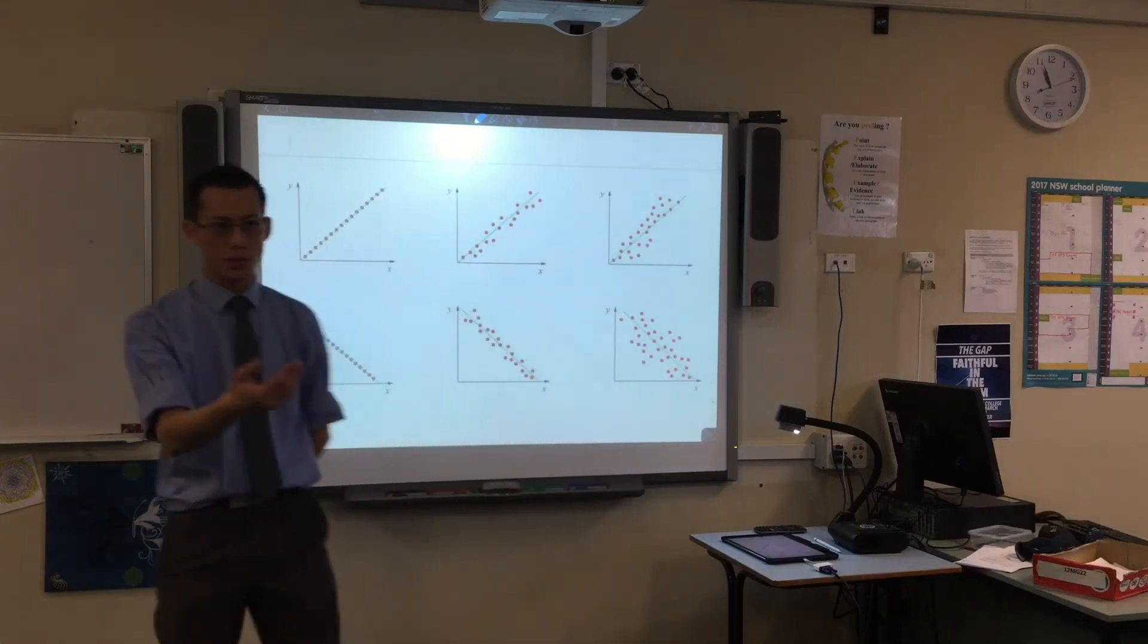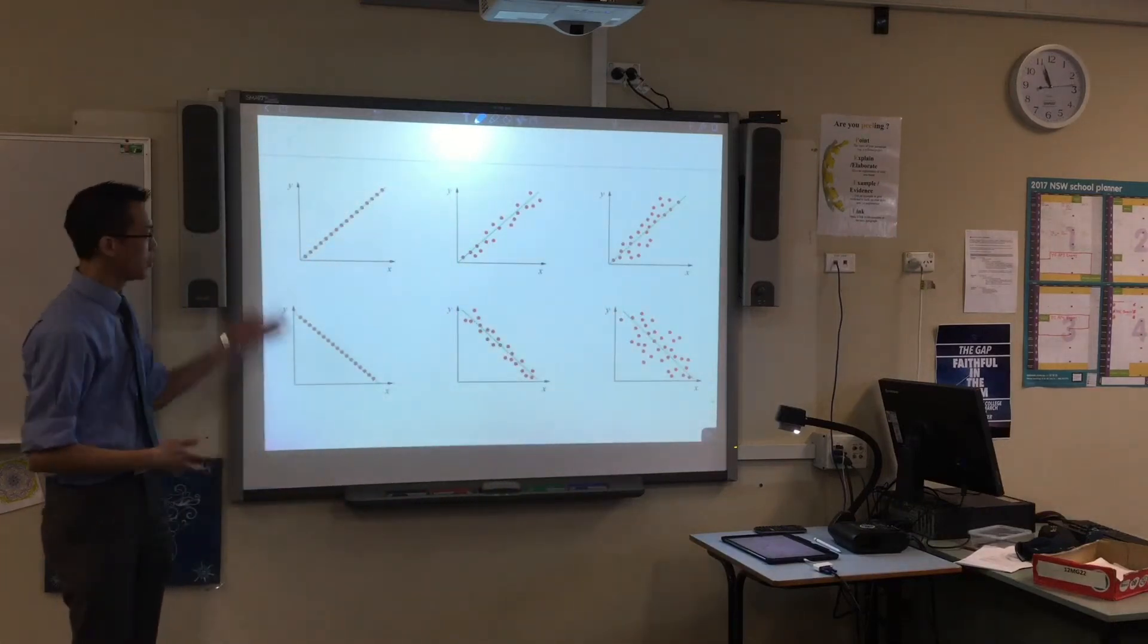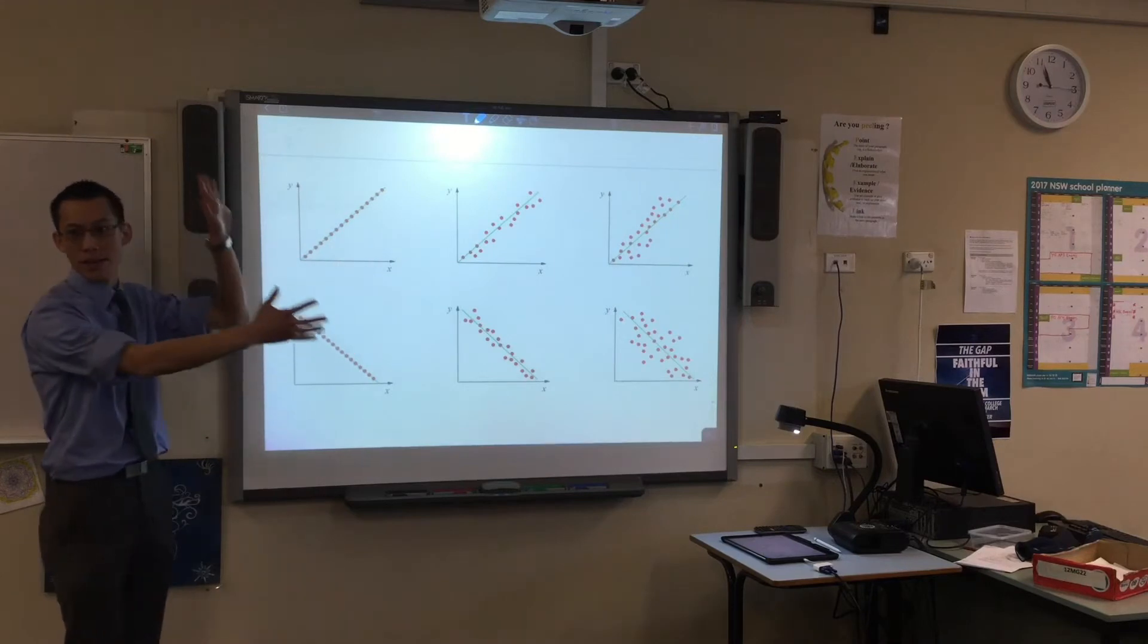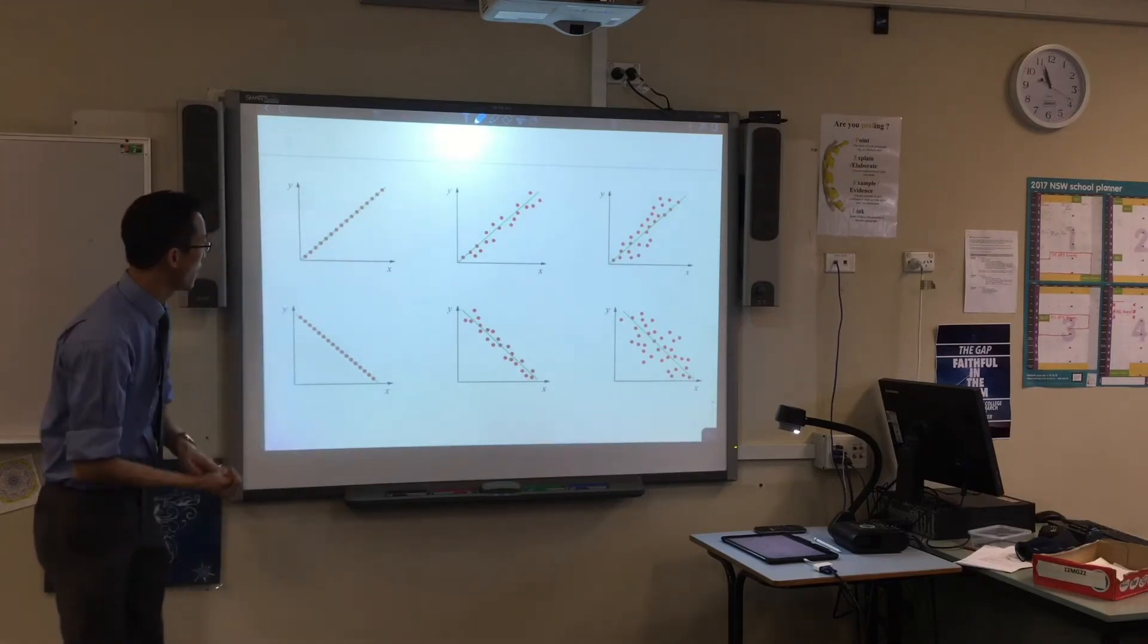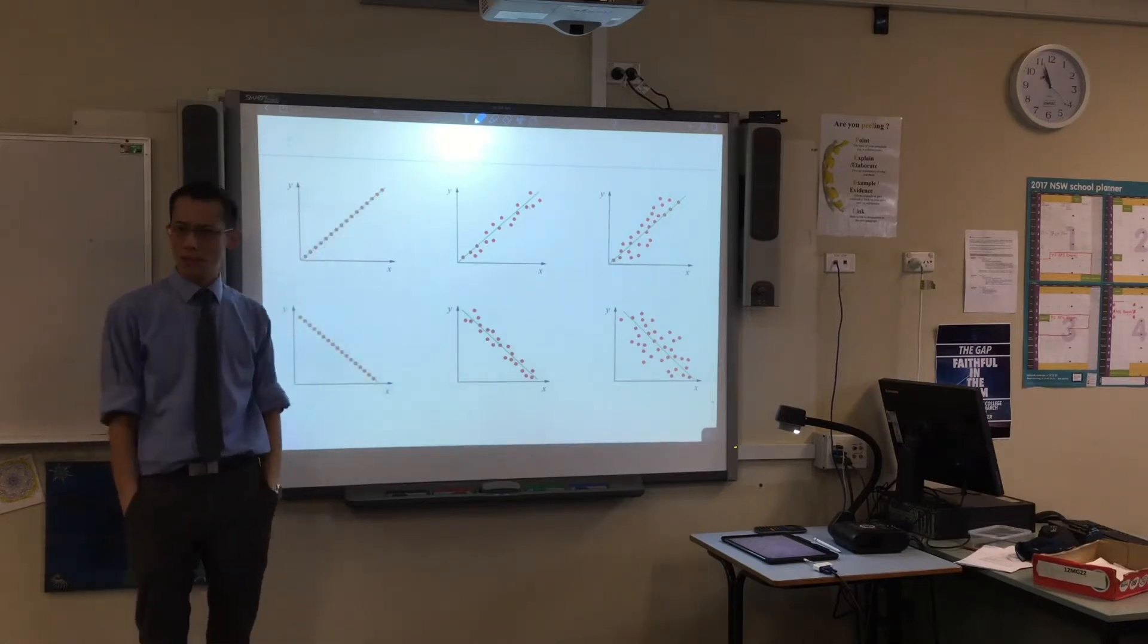While you're working I have a question for all of you. Even as you're drawing it you can see that these graphs, all of them, consist of two things. Every single one has the same two things on it. You've got these red dots. What do these red dots represent?